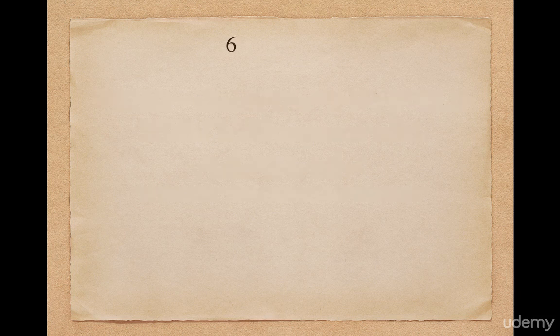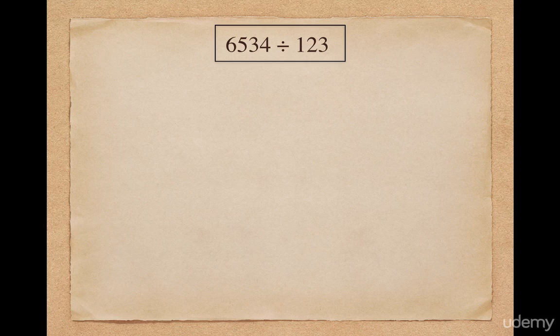Let's take our first example. Suppose I want to divide 6534 by 123. Here 123 starts with 1 and it is closer and greater than a power of 10, so I can use the Paravartya Yogyet concept. As a first step, I split 6534 into quotient and remainder. Note that the remainder will have one less digit than the divisor. Here the divisor has 3 digits, so the remainder will have only 2 digits.